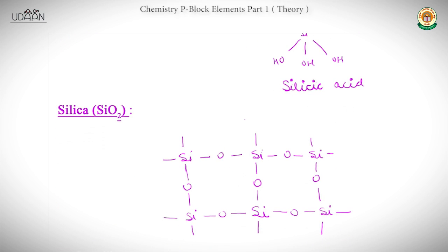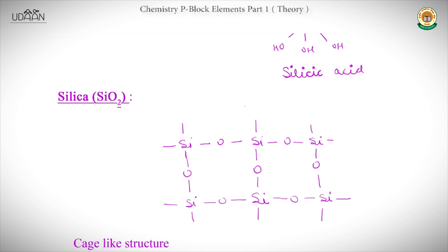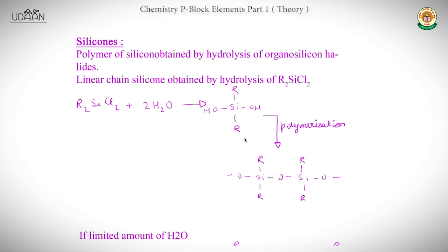SiO₂ is also called silica. Its structure is very important for JEE Mains and Advanced. It has a cage-like structure — you can see that a cage is formed by silicon and oxygen, which is why it is called a cage-like structure.